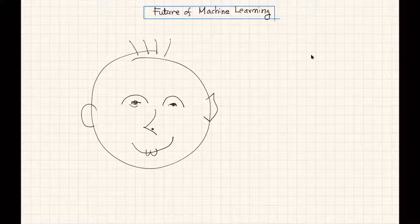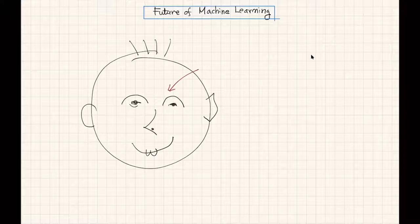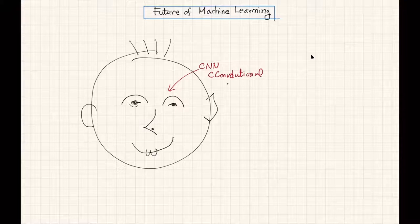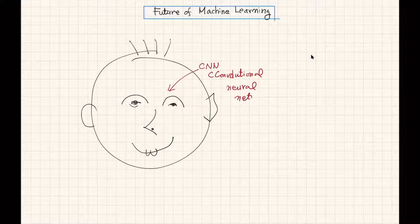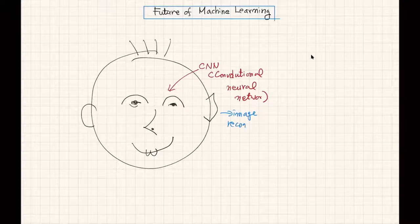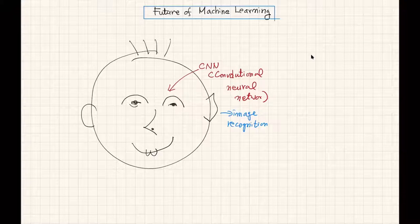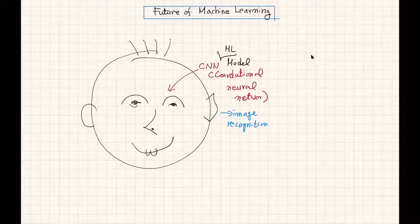Machine learning models start with CNN, which is a convolutional neural network. It was usually developed for the purpose of image recognition. Two weeks later, I'm going to explain the convolutional neural network machine learning model.